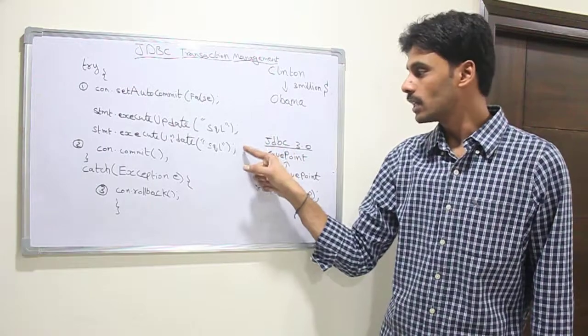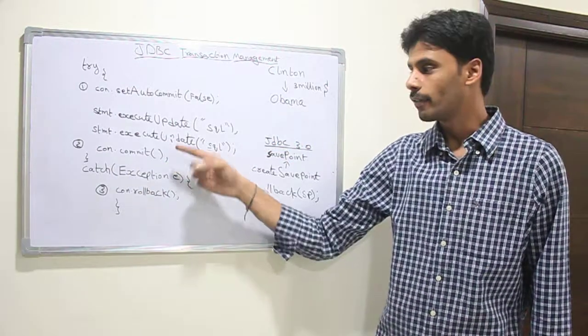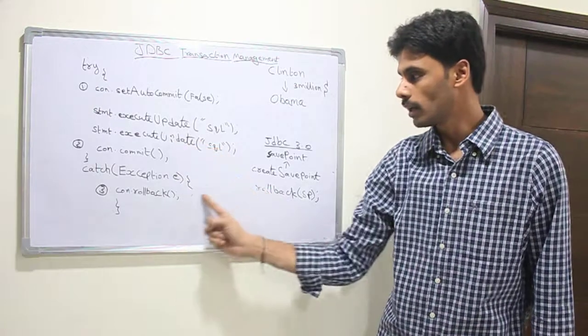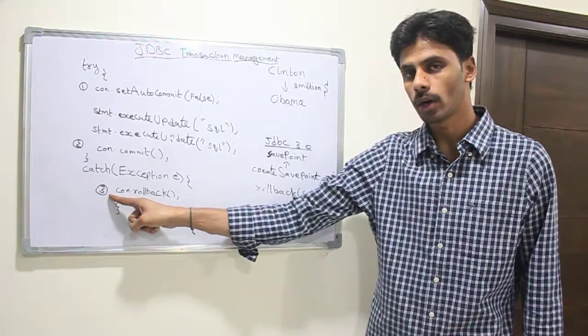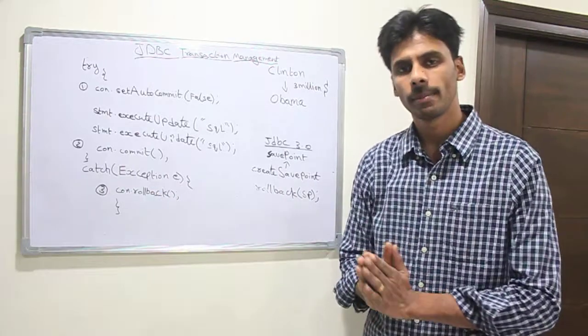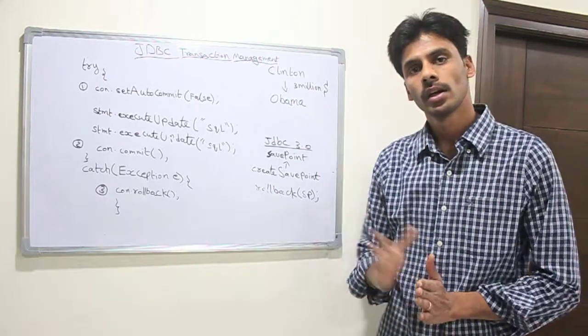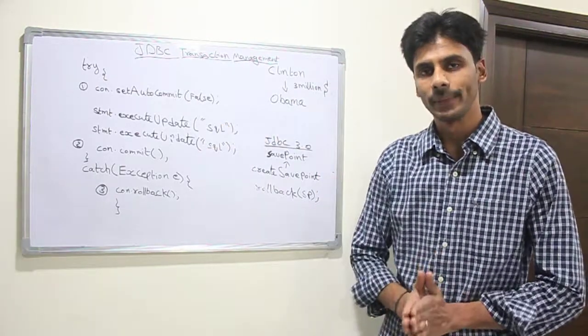If this statement goes through but this fails, we are still okay because the transaction is not committed. If an exception happens here, it will go to the catch block wherein we are saying the third important method, connection.rollback. All the changes that were temporarily made will be cleaned up and both the changes will never be saved to the actual tables.